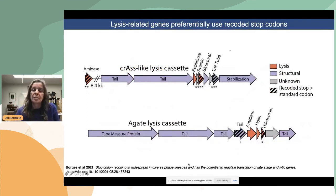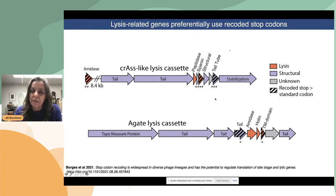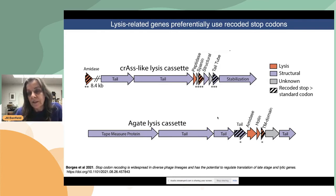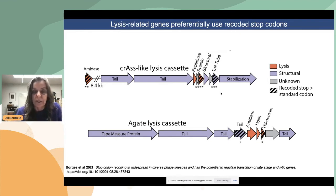She was able to show statistical support for a higher than expected prevalence of these recoded stop codons in some very interesting genes — simply put, genes that would be late-stage expressed and critical in cell lysis. You can imagine that this is a mechanism to prevent early translation of genes that would be detrimental to the phage if they were functional too early in the replication cycle.